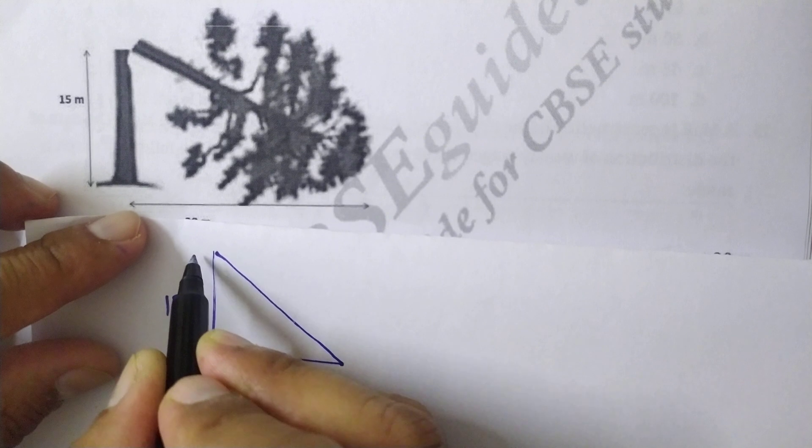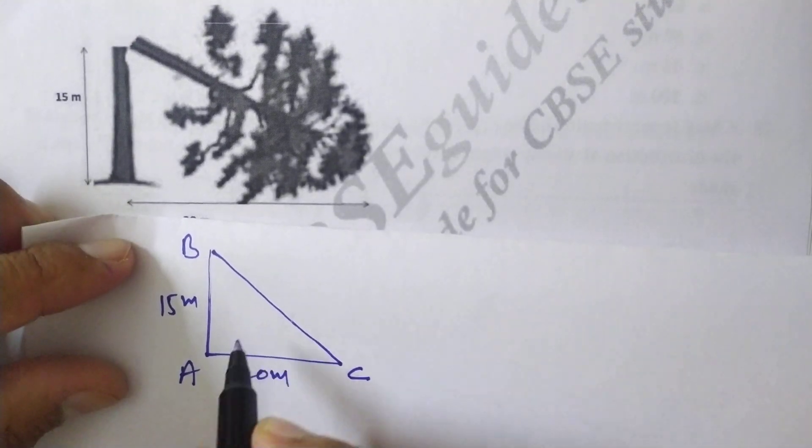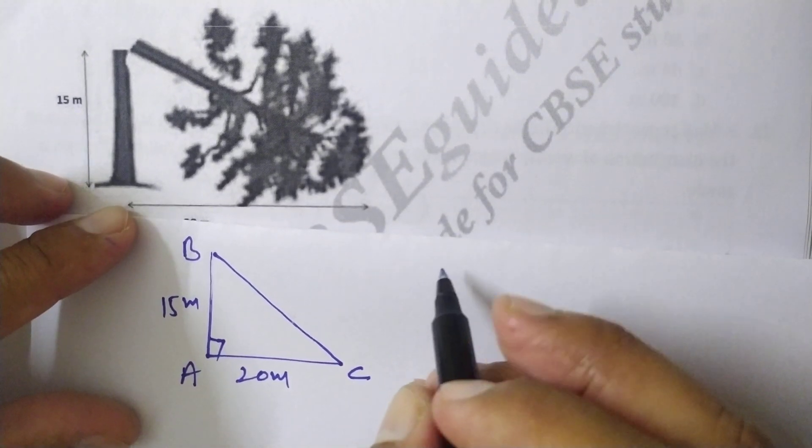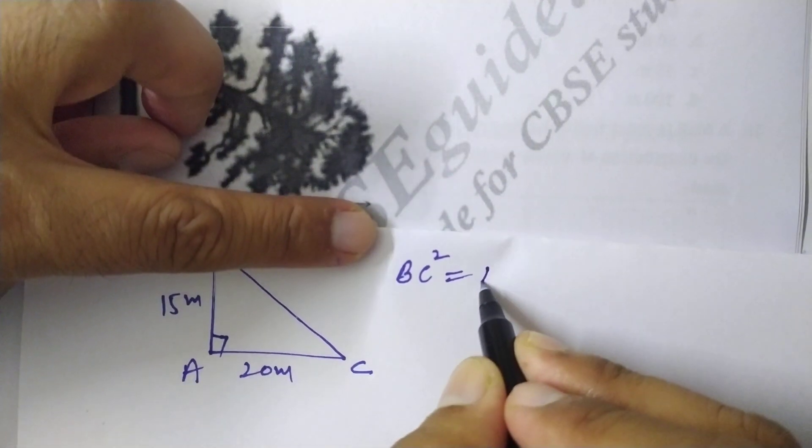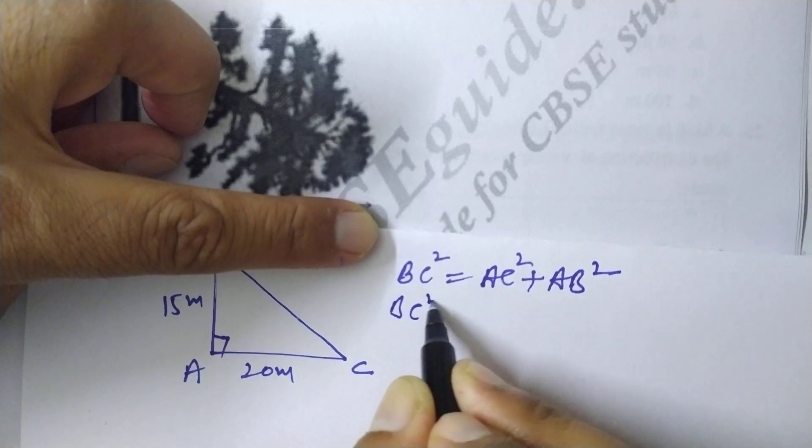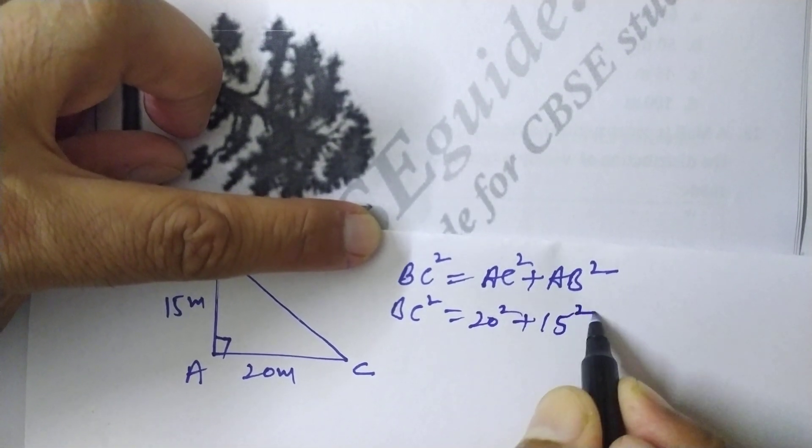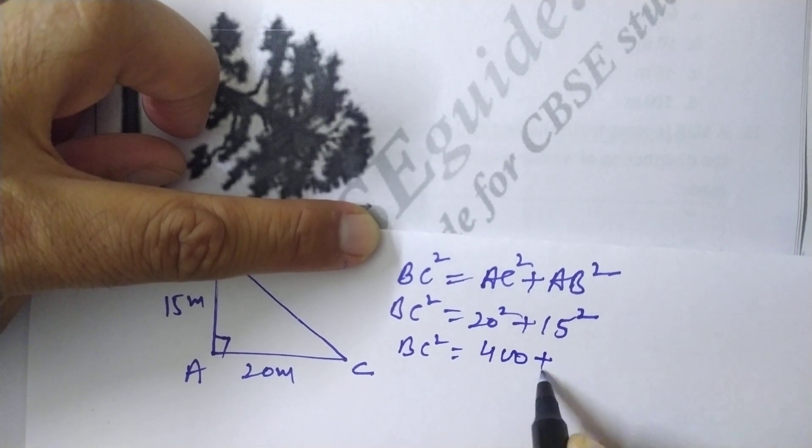Suppose this broken part is BC. Here is a 90 degree angle so we use Pythagoras theorem. Pythagoras theorem says that hypotenuse square equals base square plus perpendicular square. So BC² = 20² + 15².